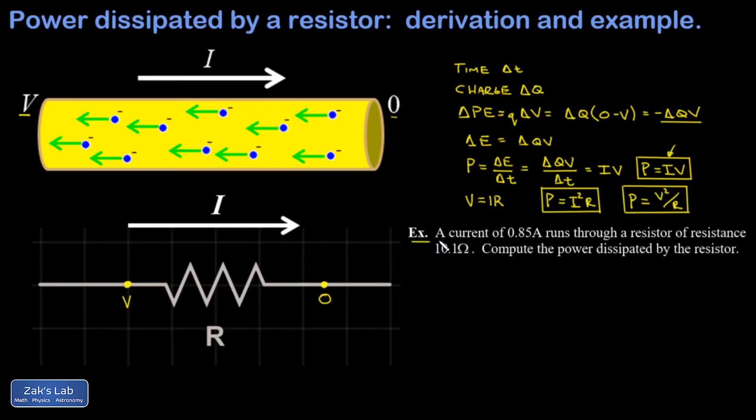Let's wrap things up by working an example. So I have a current of 0.85 amps running through a resistor with resistance 10.1 ohms. Compute the power dissipated by the resistor. Okay. So the variables that were given to us were I and R. So I'm going to use I squared R as my starting method here.